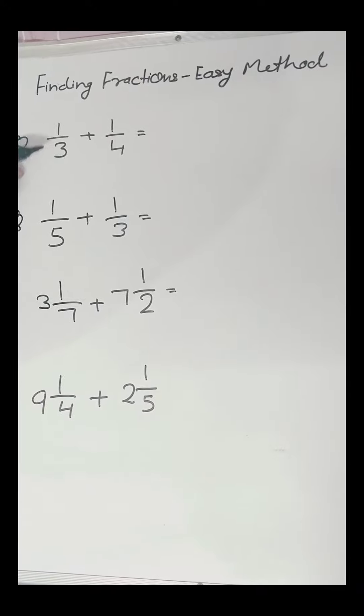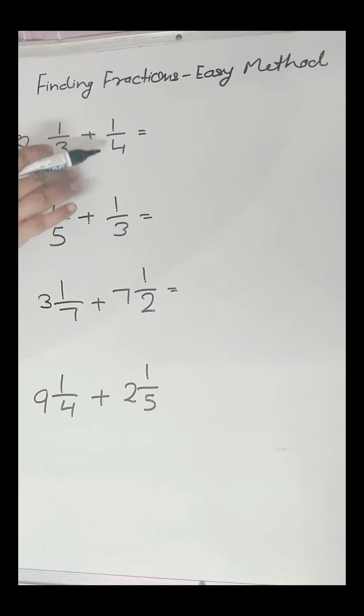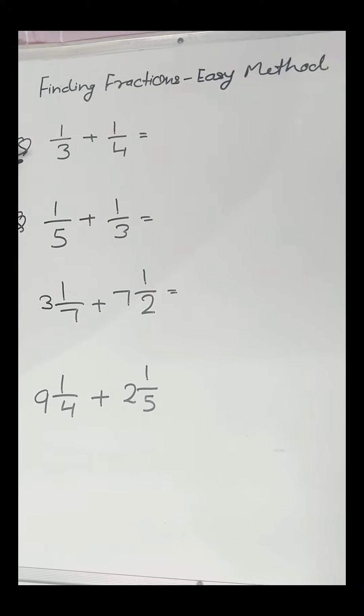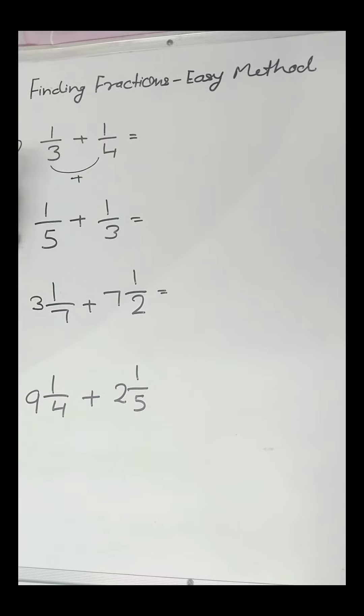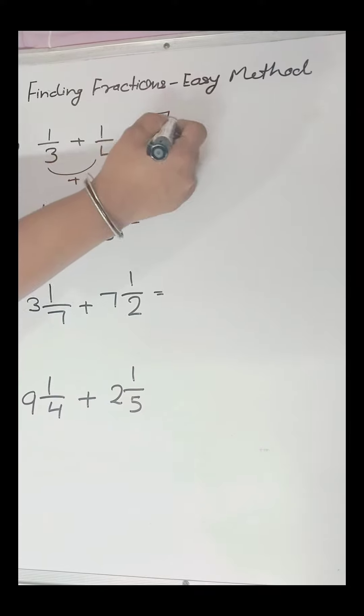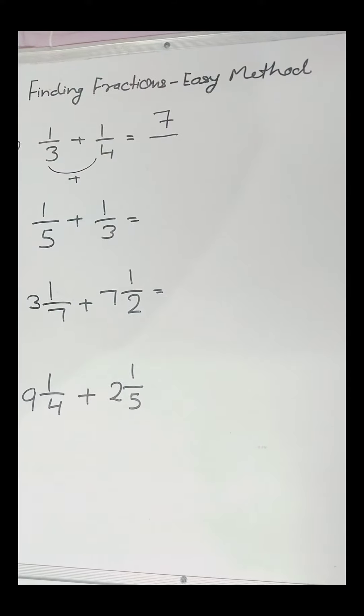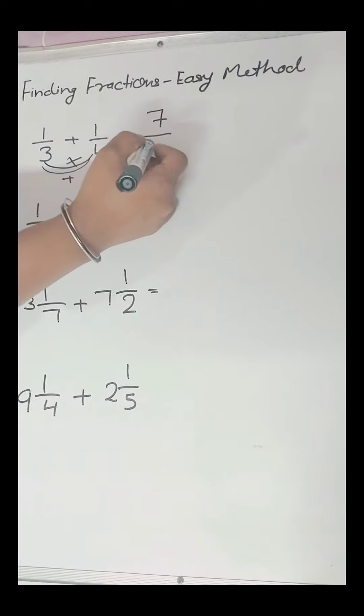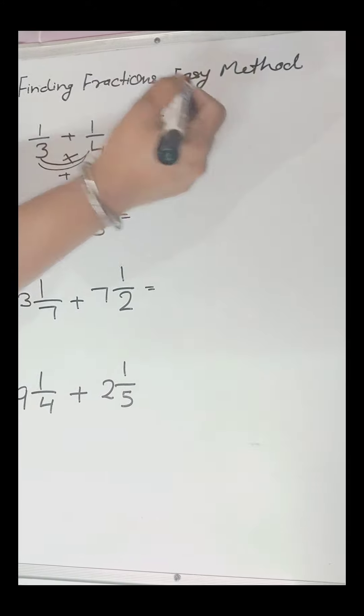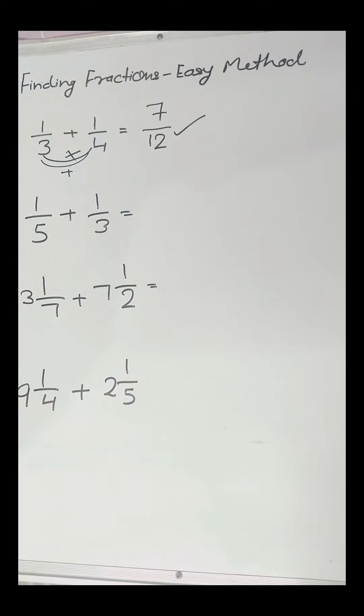The first question is 1 upon 3 plus 1 upon 4. To find this, we will first add 4 and 3 which equals 7. We will place 7, and now we will multiply 3 and 4 which equals 12. We will add 12 below 7. So the answer is 7 upon 12.